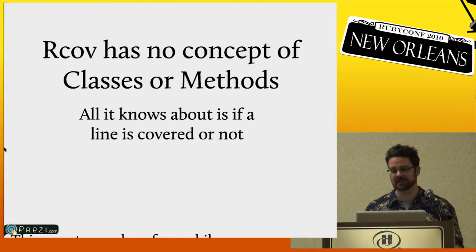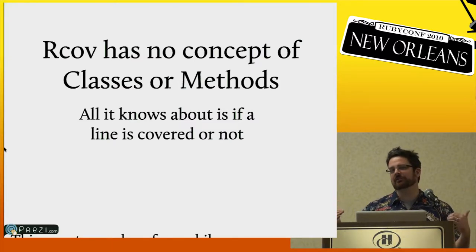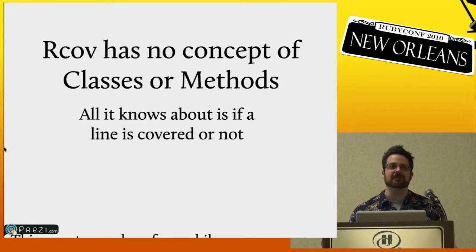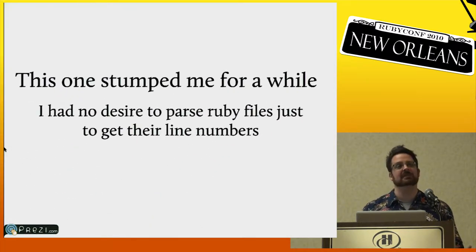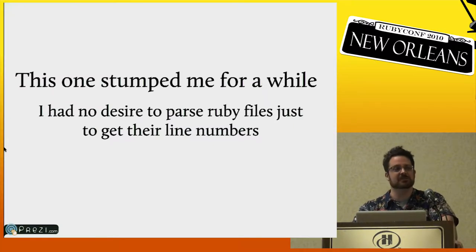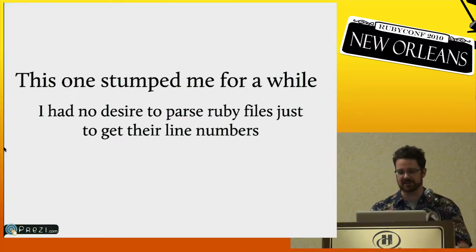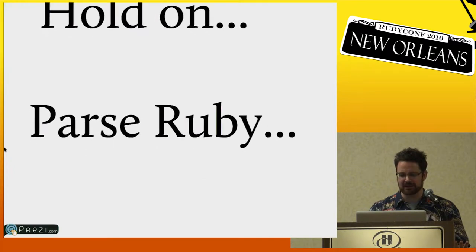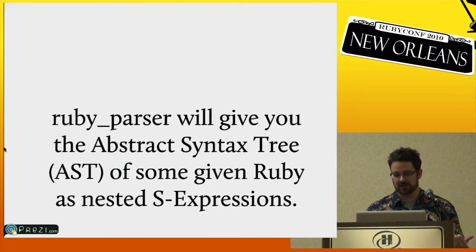I stood on this problem for a really long time, and it turns out I just shouldn't have — I should have just started writing some code. It seemed like an insurmountable problem. I opened up RCov and looked inside and found nothing I could use. I didn't want to parse Ruby files just to get line numbers — that sounds like a lot of trouble. Except there's this thing called Ruby Parser, and Ruby Parser is actually a really cool thing you give a bunch of Ruby code and it can do some very cool stuff.